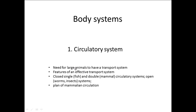So we're going to look at why large animals need a transport system, the features of an effective transport system, we're going to look at some simple circulatory systems — some closed, double and some open systems — and we're going to look at a plan of mammalian circulation.